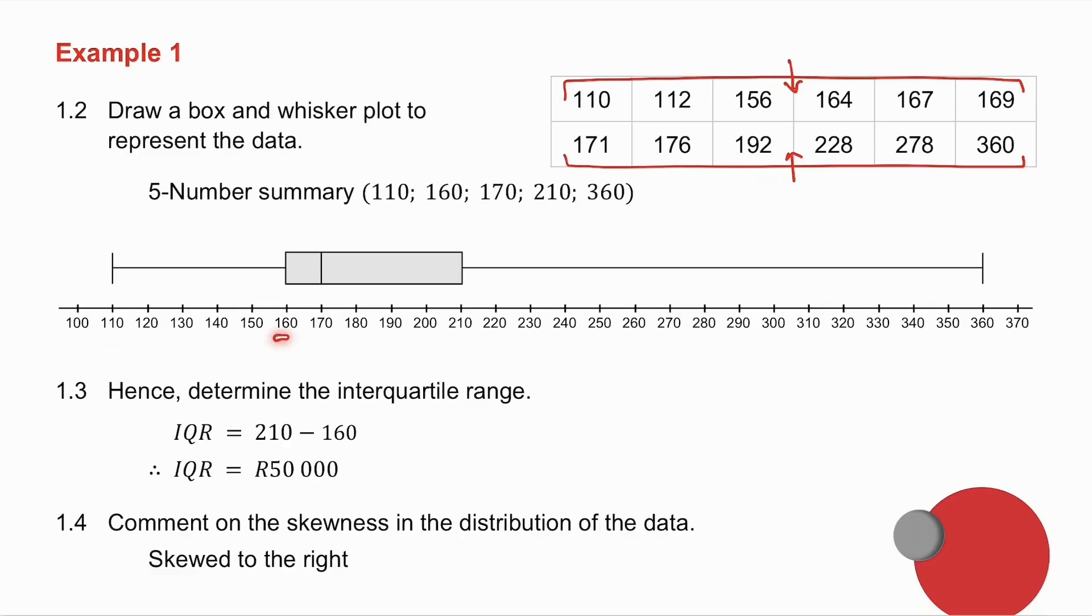So now you plot on the number line your minimum value, lower quartile, median, upper quartile, and maximum value, and draw your box and whisker diagram. 1.3 asks you for the interquartile range. The interquartile range is the upper quartile minus the lower quartile, and don't forget to multiply by a thousand.